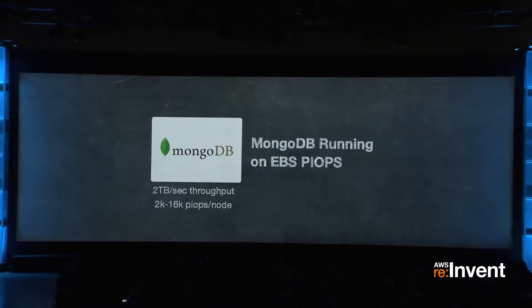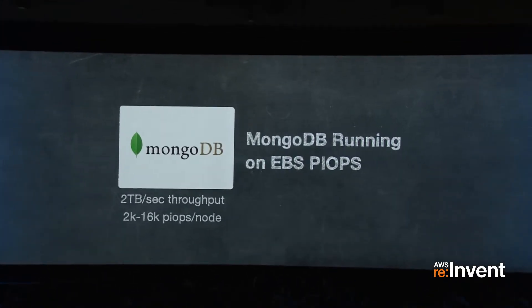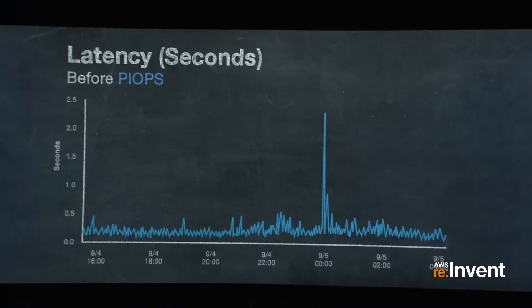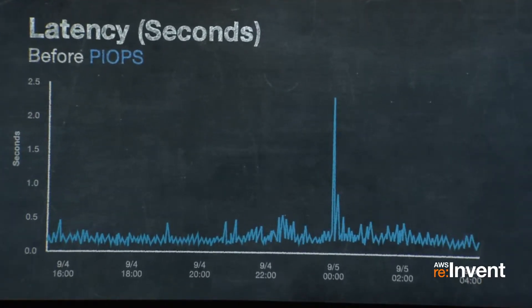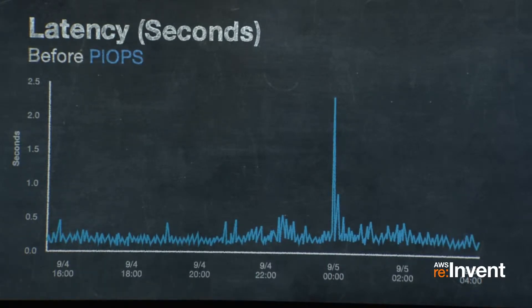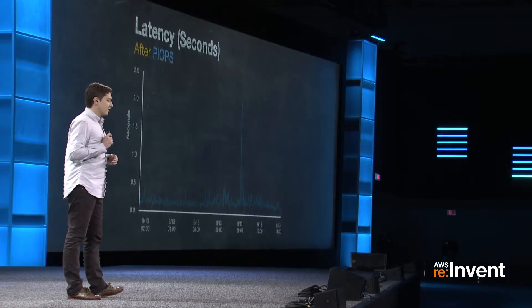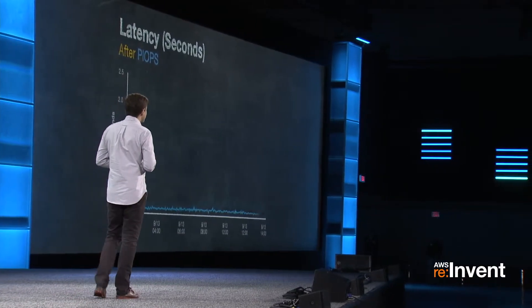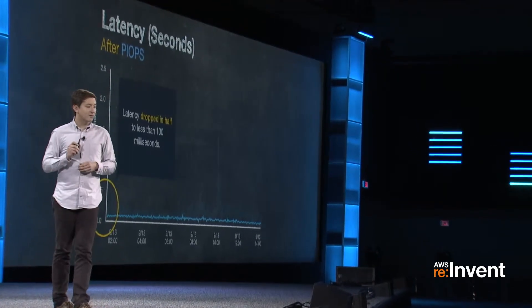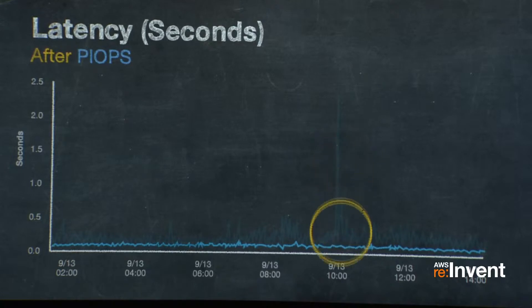This is what our latency graph looked like before — our general latency retrieving data from MongoDB on the back end. The baseline was about 200 milliseconds, not great, and you'll notice these spikes. When EBS I/O was stalling, we would get read lock contention, and suddenly a user trying to comment on their friend's photo in one of our customer's apps was waiting a long time or timing out — maybe the app was even crashing. After we turned on EBS PIOPS, things got a lot better. Our baseline latency dropped in half and our spikes went away.